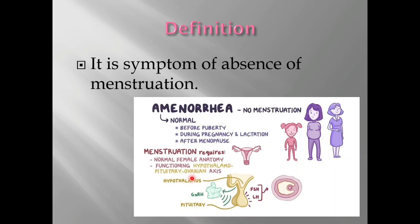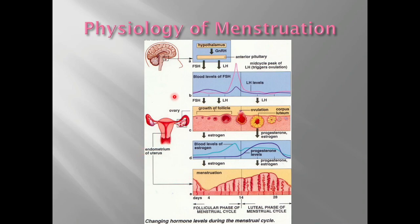Before going further into this topic, let's do a brief revision of the physiology of menstruation. The hypothalamus releases GnRH (gonadotropin-releasing hormone), which causes the anterior pituitary to release FSH and LH. Because of FSH, a primary follicle inside the ovary starts to mature. This maturing follicle releases estrogen, and due to estrogen, the endometrium starts to grow. Around the 14th day or mid-cycle, ovulation takes place.